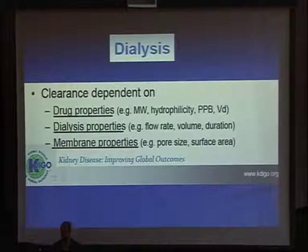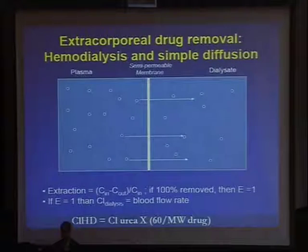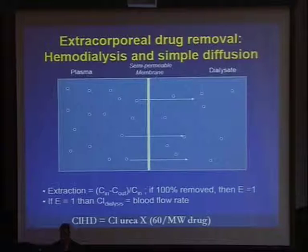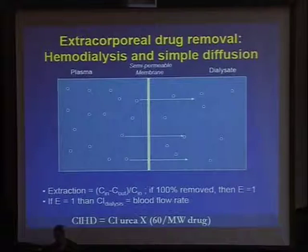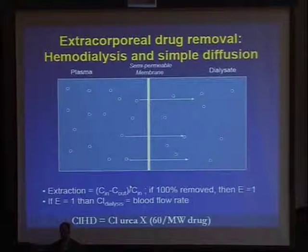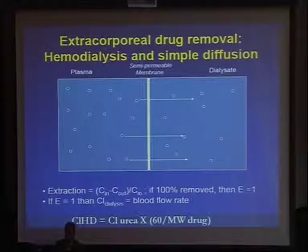When you increase the blood flow rate, this delivers more drug to the semipermeable membrane, so there is going to be more elimination of the drug. Also, if we increase the dialysate flow rate, this increases the concentration gradient and will increase removal of the drug. To find out the extraction of the drug, we measure the concentration going in and out, divide by the concentration going in. If 100% is removed, extraction equals 1, and clearance of the dialyzer will equal the blood flow rate.